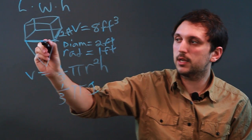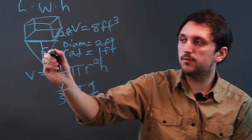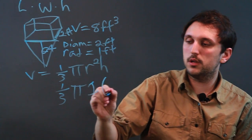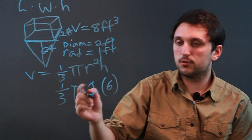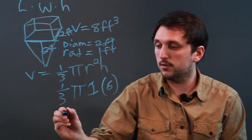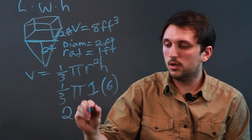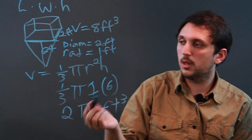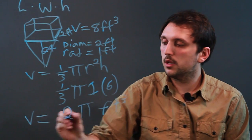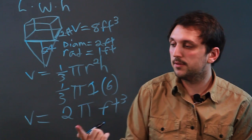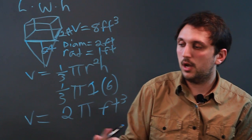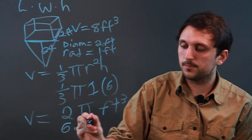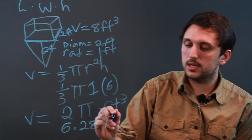And let's make our height 6 feet. So times 1 times 6 — one-third times 1 times 6 is 2 pi feet cubed. And that's our volume. We can calculate 2 pi to be about 6.28 feet cubed.